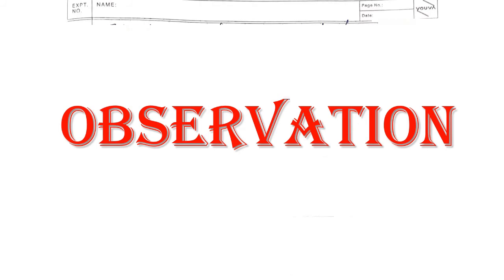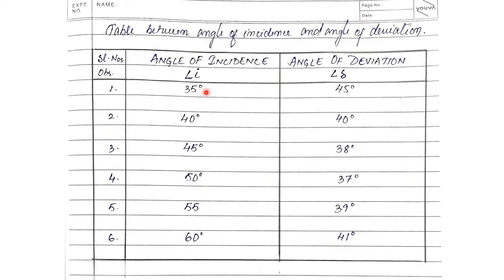For your observation table, write one column for angle of incidence (i) and another for angle of deviation. Record: 35°→45°, 40°→40°, 45°→38°, 50°→37°, 55°→39°, 60°→41°.